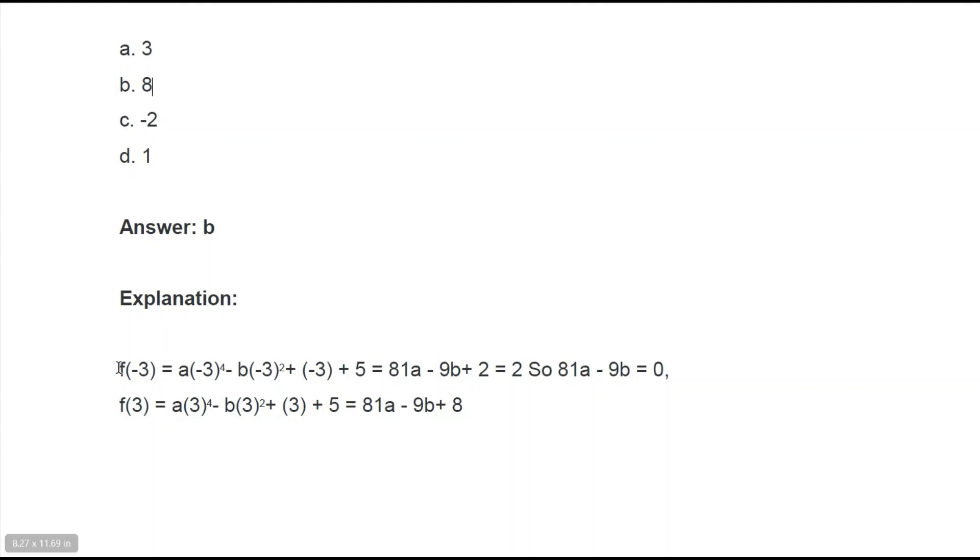Here it is: f(-3) gives the equation 81a - 9b = 0. On putting x = 3, we get the equation 81a - 9b + 8.